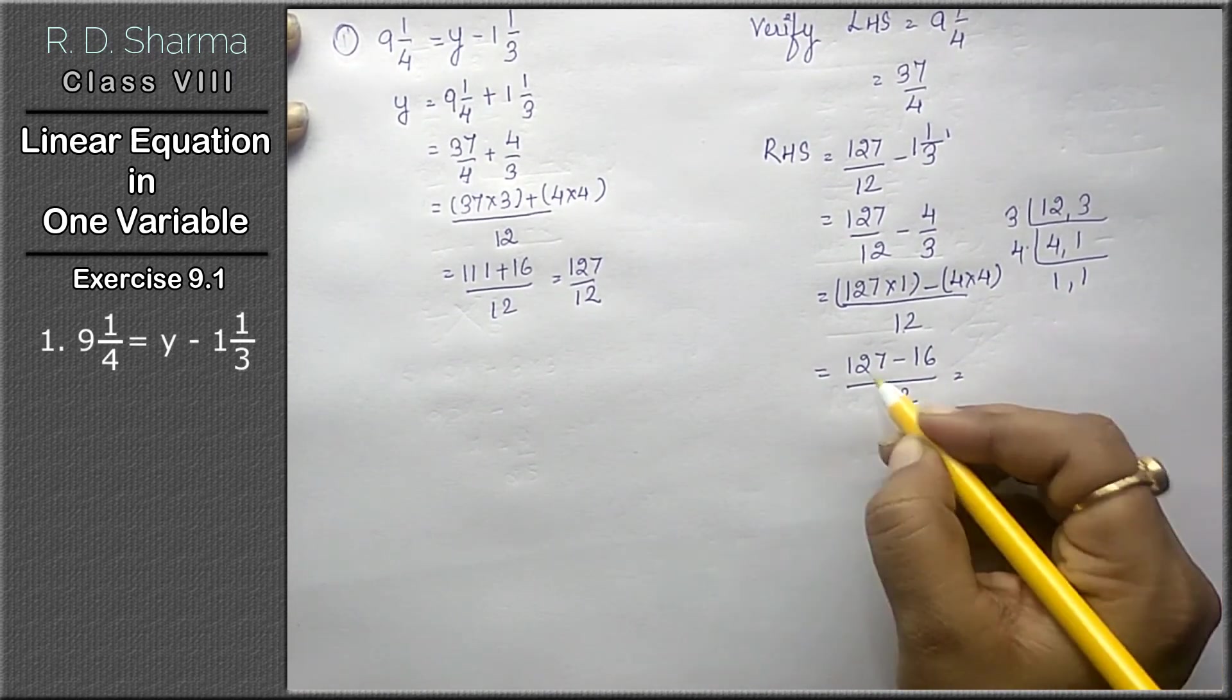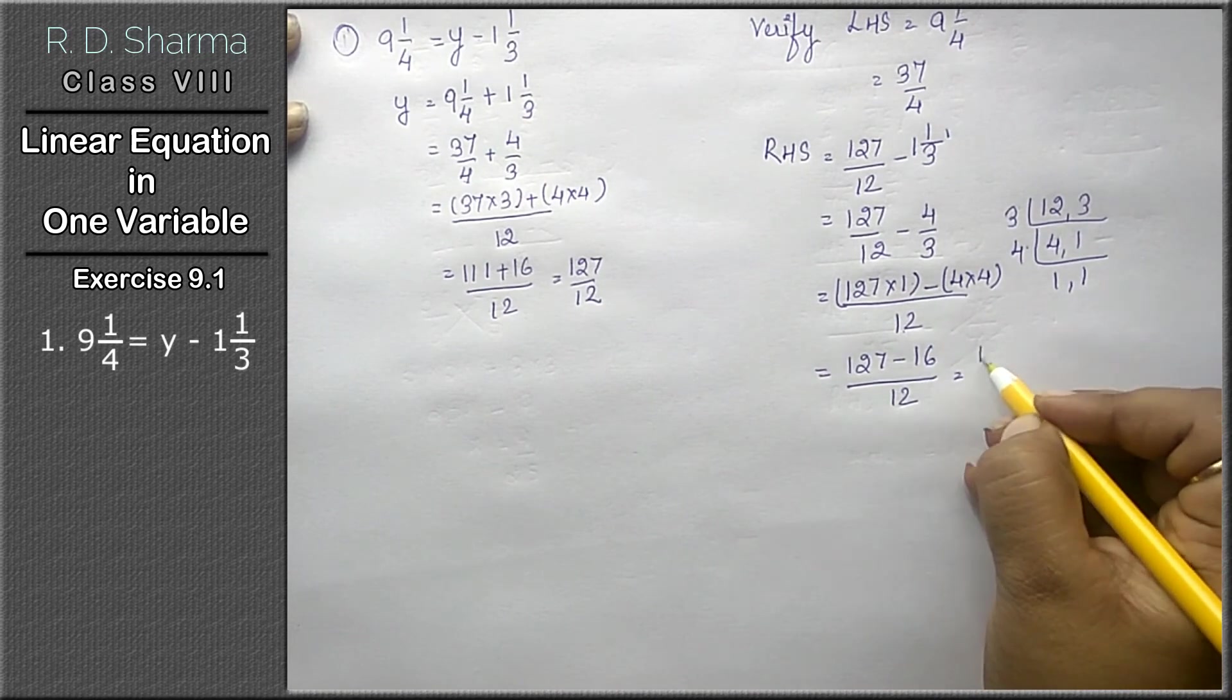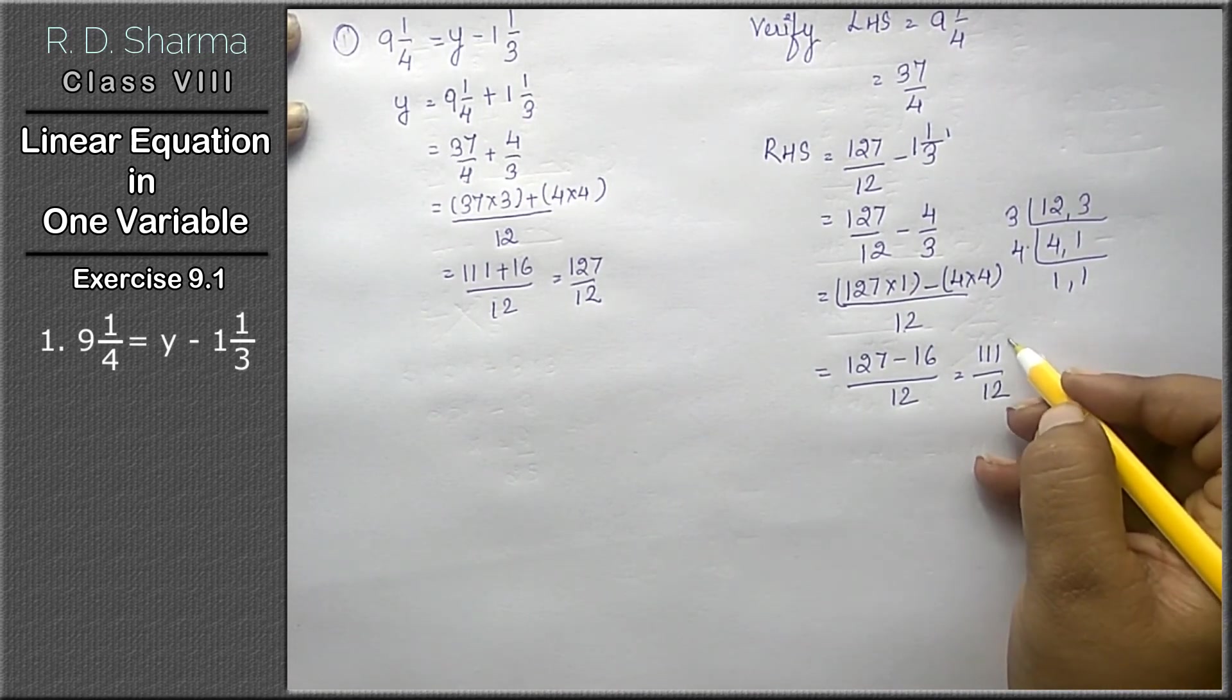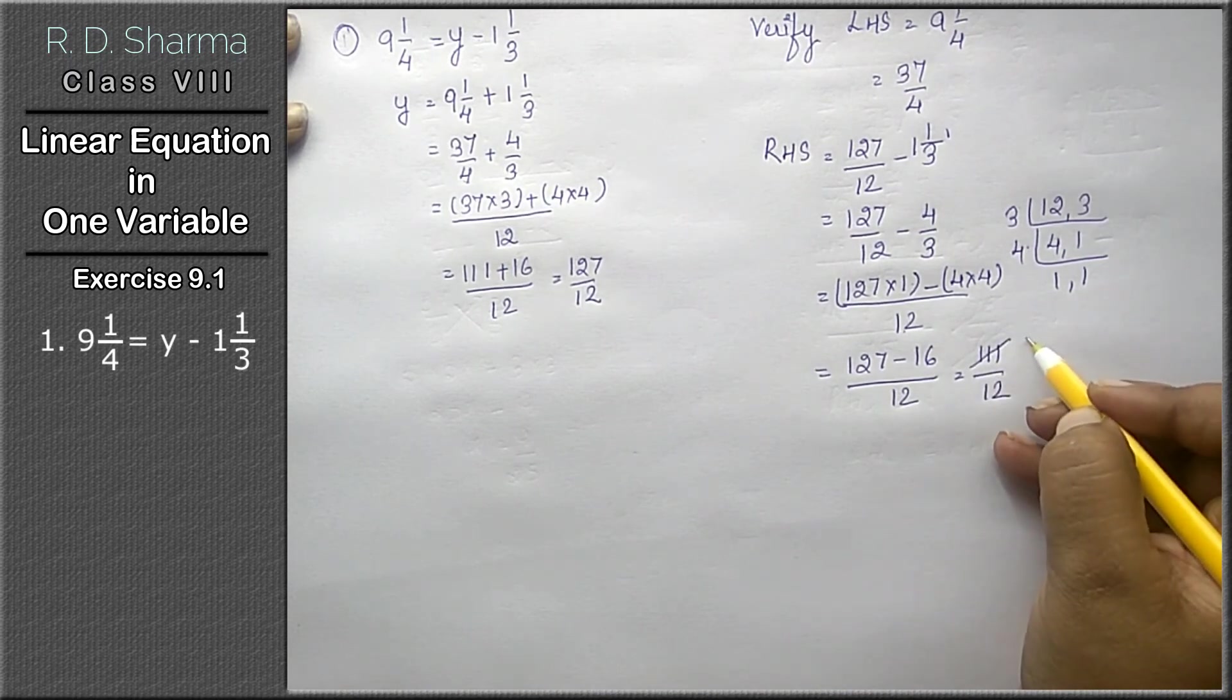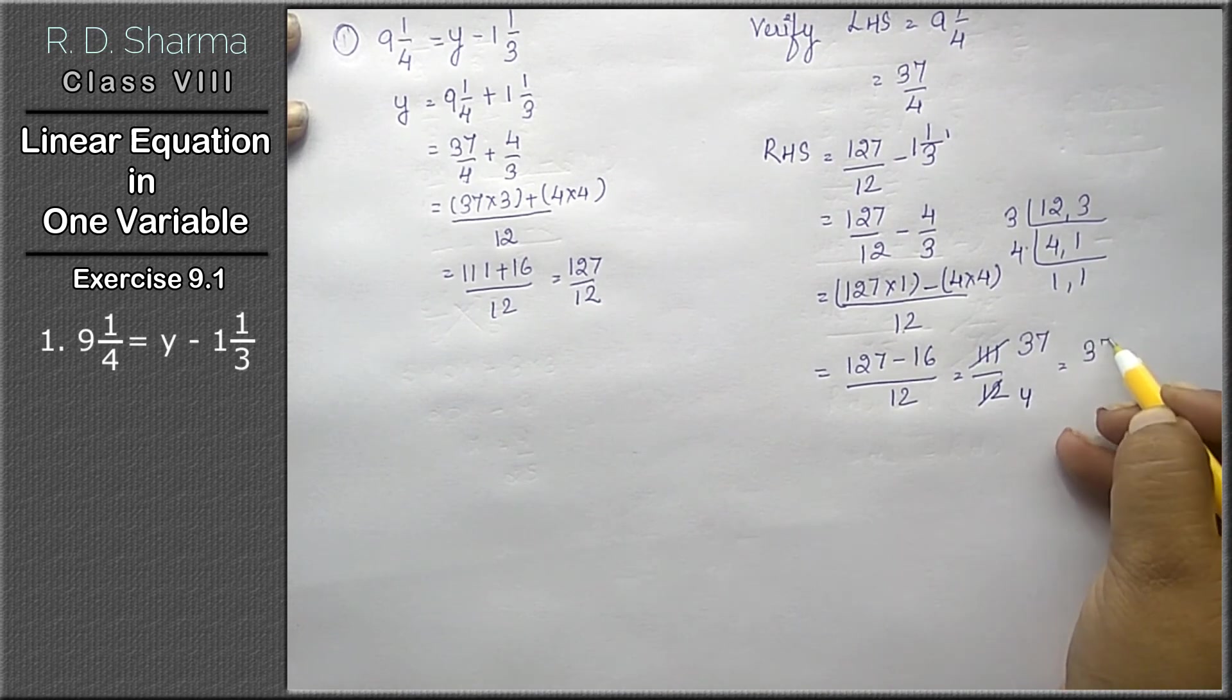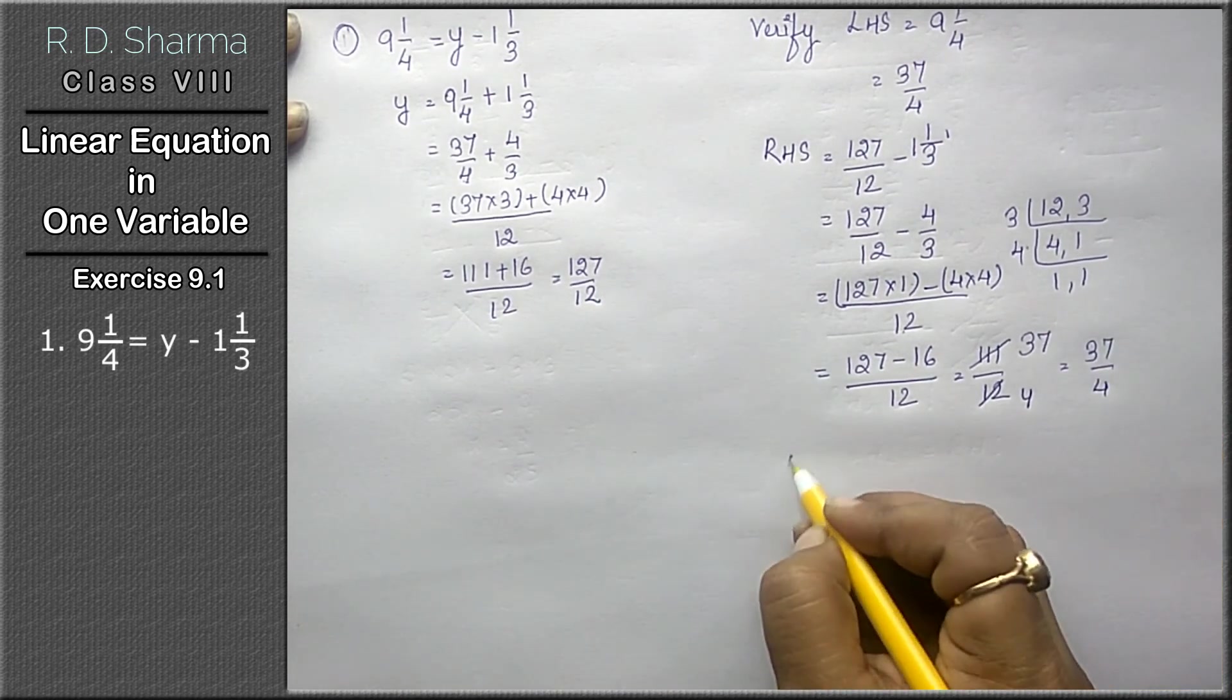127 minus 16: 3 from 7 leaves 4, so 111 upon 12. Now we will reduce it. 3 times 37 is 111, 3 times 4 is 12. The answer is 37 upon 4, which means left hand side equals right hand side.